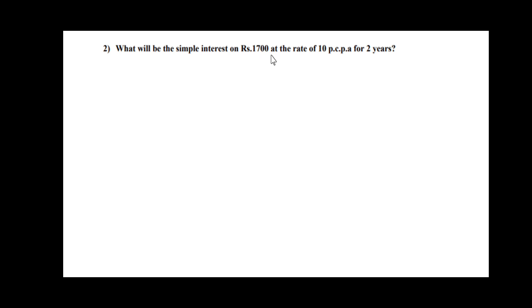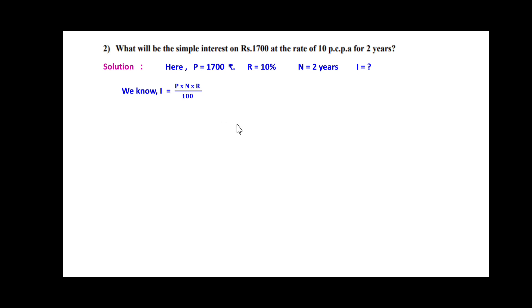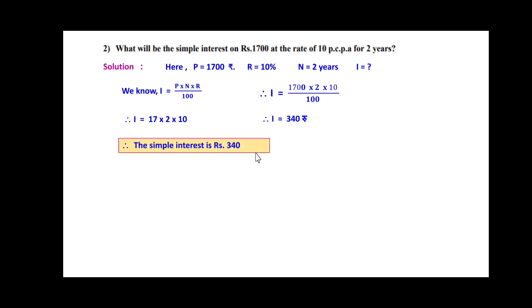Next problem: what will be the simple interest on rupees 1700 at the rate of 10% per annum for 2 years? Given: principal P = 1700, R = 10%, N = 2 years. We use I = P × N × R ÷ 100. Substituting: I = 1700 × 2 × 10 ÷ 100. The two zeros cancel, giving I = 17 × 2 × 10 = 340. So the simple interest is rupees 340.